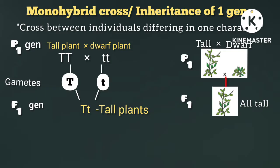For example, the character is height. One plant is tall and the other is a dwarf or short plant. In a monohybrid cross, only one gene — here, the gene for height — is being studied.